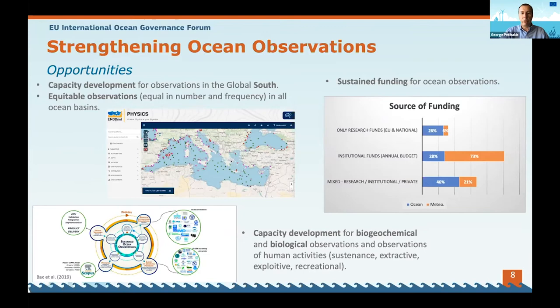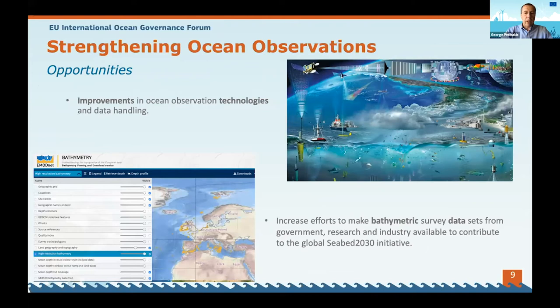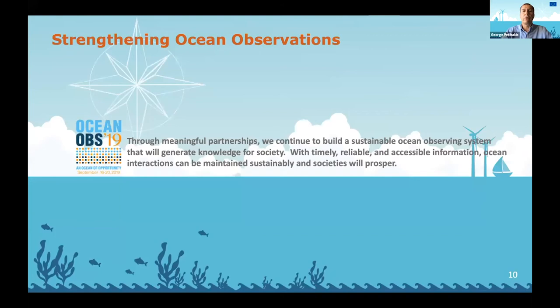Sustained funding is a major challenge and drastic actions are needed towards increasing the percentage of secure funds. Long-term observations are of paramount importance for climate, and we cannot afford to lose observing systems that have been operating for long, nor can we afford periodic operation of systems. We need to improve our capacity on biological observations — establishing essential ocean variables for biology will concentrate efforts and give guidance to manufacturers for automated sensors. We need to develop links between different communities such as operational oceanography with communities operating at the regional base like the regional conventions. Innovative technologies are necessary: low-cost plug-and-play sensors that can be used across different platforms, systems that can communicate and exchange information in real-time, and autonomous platforms. We also need to increase efforts to make bathymetric survey data sets available from all different sources. Through meaningful partnerships, we continue to build a sustainable ocean-observing system that will generate knowledge for society.